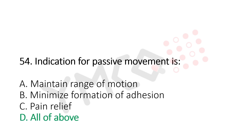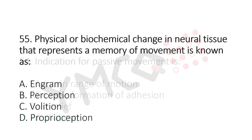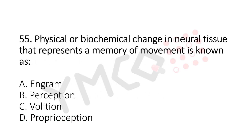Question number 55: Physical or biochemical changes in neural tissue that represent a memory of movement is known as: Option A, engram; Option B, perception; Option C, volition; Option D, proprioception. The answer is Option A, engram.